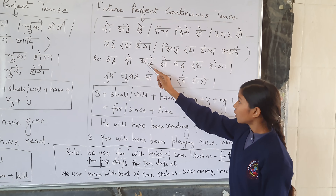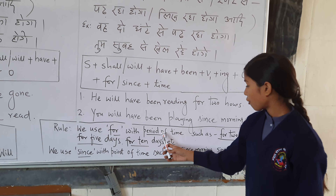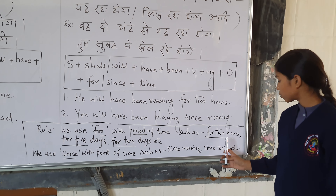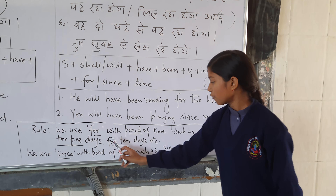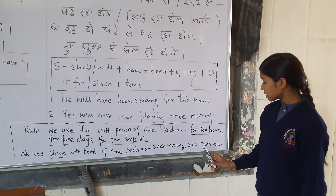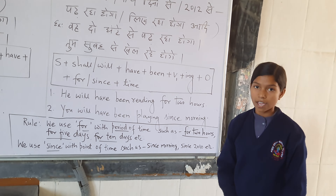The first is Future Perfect Tense, and the second is Future Perfect Continuous Tense. I will explain to you in English. For example: I am studying for two hours, five days from 2012, and reading in the same way.